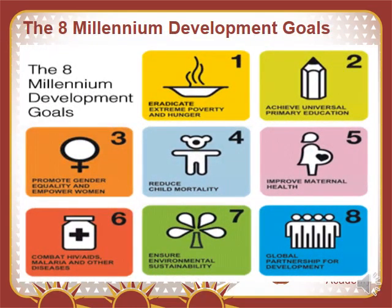These Millennium Goals included: to eradicate extreme poverty and hunger, to achieve universal primary education, to promote gender equality and empower women, to reduce child mortality, to improve maternal health, to combat HIV and AIDS, malaria and other diseases, and to ensure environmental sustainability and global partnership for development.